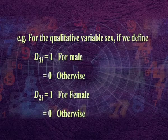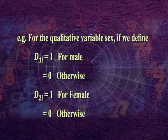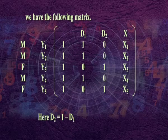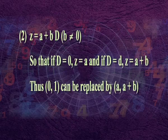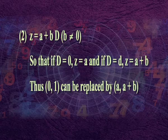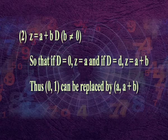For example, for the qualitative variable sex, if we define d1_i = 1 for male and d1_i = 0 otherwise, d2_i = 1 for female and d2_i = 0 otherwise, then if we have a sample of three males and two females with income and experience as other variables, we have the matrix given here. Here d2 = 1 - d1, which shows that there is multicollinearity — this is the dummy variable trap. Only one dummy variable should be used. Number 2: in general, a dummy variable can take any value z = a + b*d where b ≠ 0, so that if d = 0, z = a, and if d = d, z = a + b. Thus 0 and 1 can be replaced by a and a + b and its choice is purely arbitrary. The value 0 is called the base, control, or omitted category.